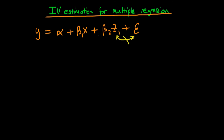In other words, z1 is exogenous. We're going to use x's to denote endogenous variables and z's to denote exogenous variables. In situations like this, you might ask: can we just use z1 as an instrument for x?